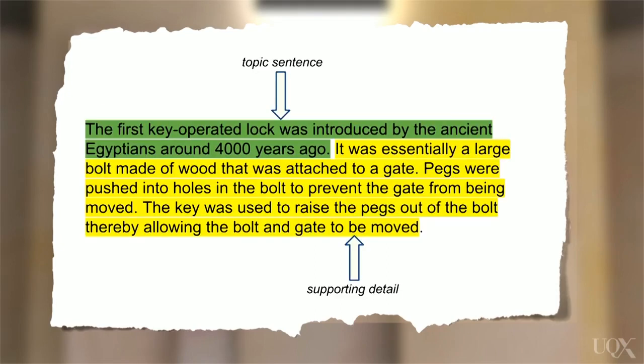Here you can see that the topic sentence is highlighted in green and contains the main idea of the paragraph, which in this case is about the first key-operated lock. While the sentences in the remainder of the paragraph, as highlighted in yellow, are the supporting details.